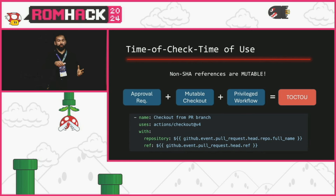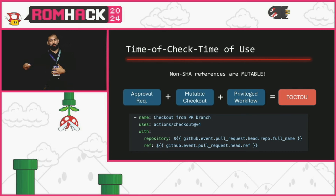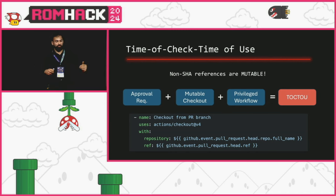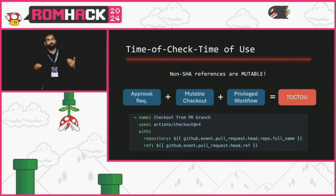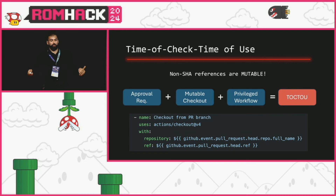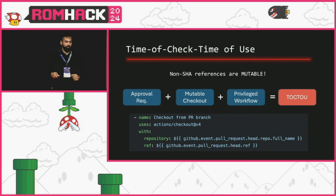When looking at checkouts, you can sometimes also see time-of-check issues. You'll encounter workflows with a maintainer approval requirement — they add a label requirement or ensure only the maintainer can trigger the workflow via comment. But the mistake is checking out code from the pull request using a branch, which is a mutable reference. If an attacker updates their pull request after the maintainer has approved it, the workflow runs unreviewed code, bypassing the approval requirement.